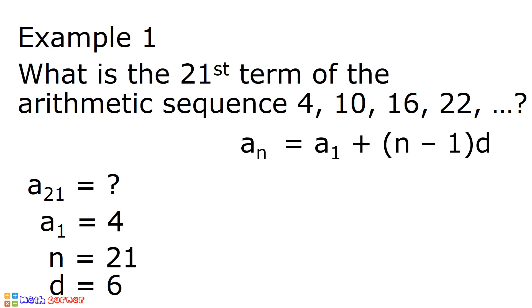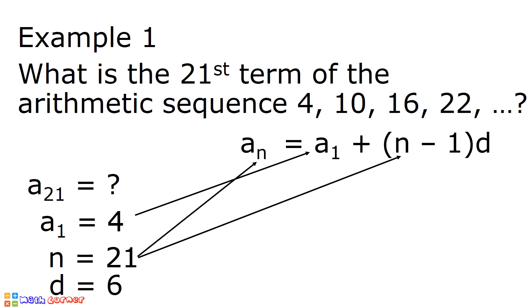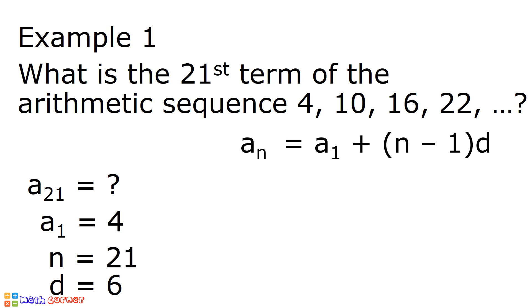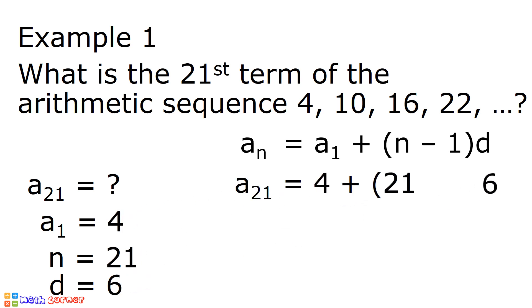This is our formula for solving the n-th term of an arithmetic sequence, and we will substitute all the given values. 4 goes to a sub 1, 21 to n, and 6 to d. After substitution, we have: a sub 21 is equal to 4 plus quantity 21 minus 1 times 6.